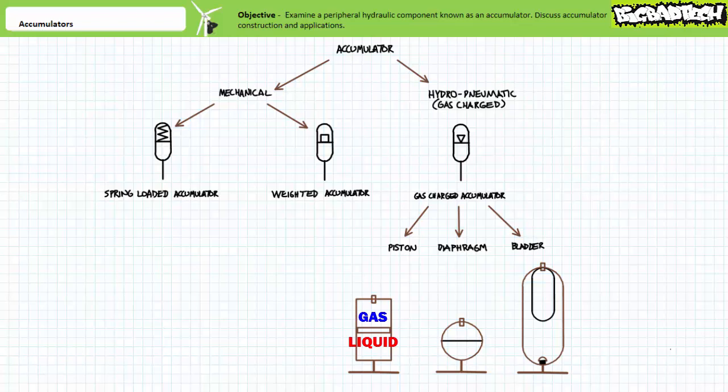A diaphragm accumulator swaps out the piston barrier with a flexible synthetic rubber disc between the top and bottom halves of the spherical vessel. As pressure changes, the disc distends and supplies or absorbs pressurized flow.